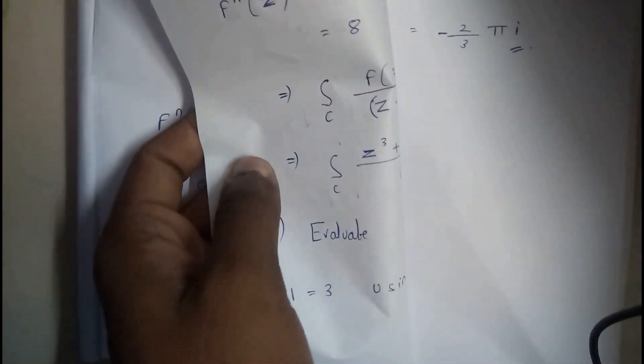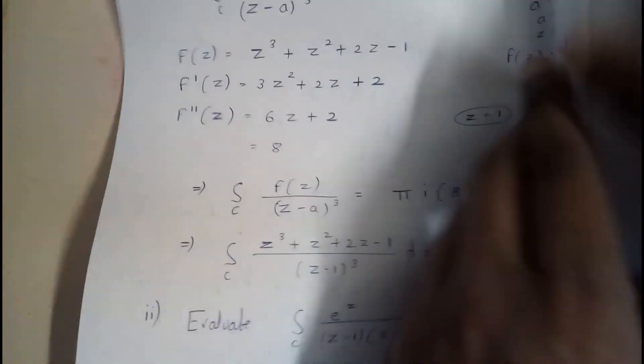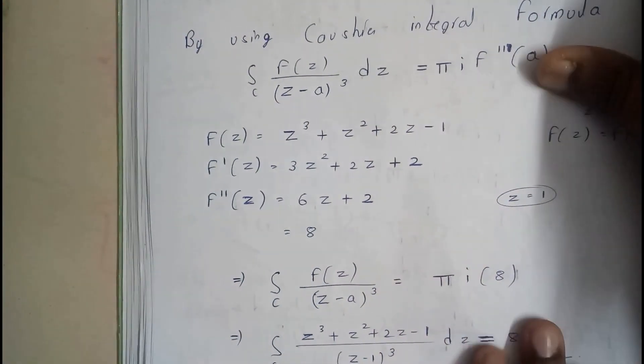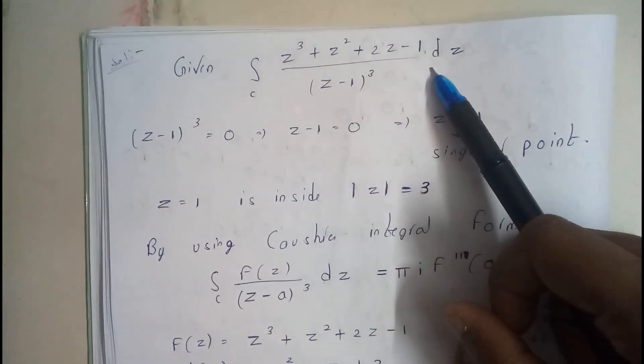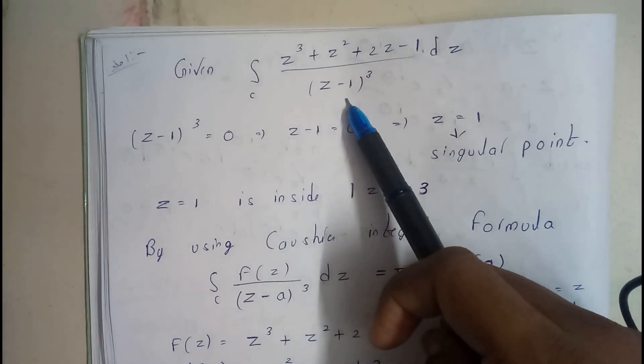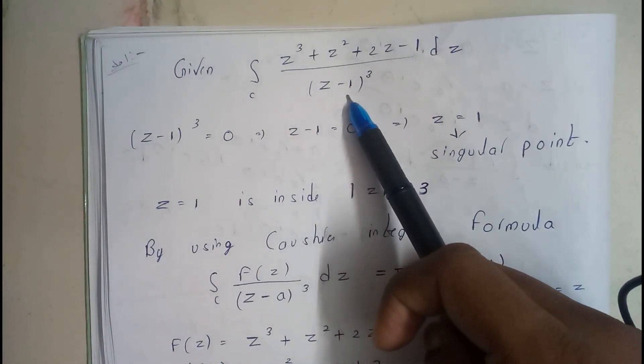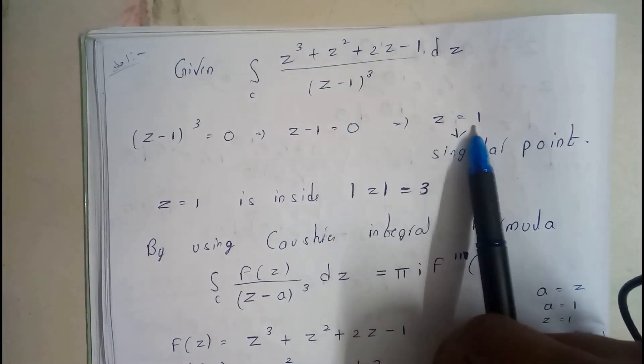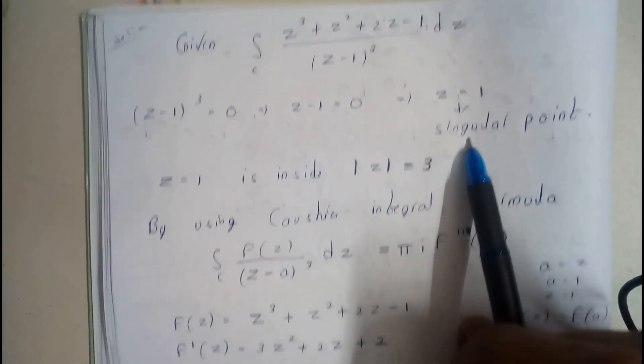Okay guys, this is an easy problem, don't get scared of it. So basically the given question is this, right? So we'll be finding the singular point of this. Singular point is nothing but we'll be equating it to 0, so we got z = 1, that is the singular point.